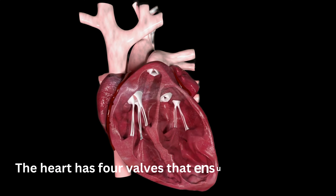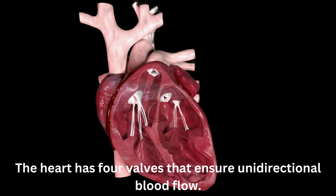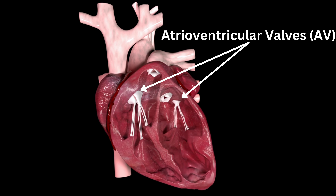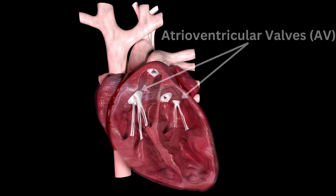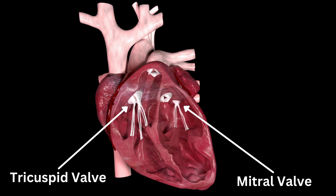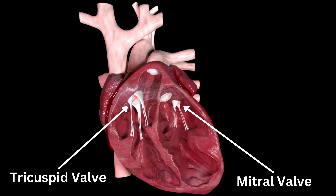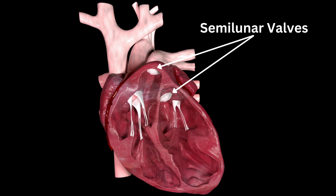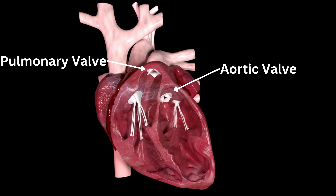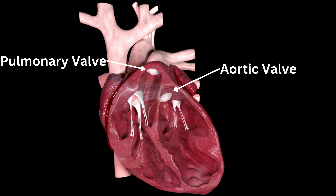The heart has four valves that ensure unidirectional blood flow. The atrioventricular (AV) valves, including the tricuspid valve on the right side and the mitral valve or bicuspid valve on the left side, separate the atria from the ventricles. The semilunar valves, including the pulmonary valve on the right side and the aortic valve on the left side, separate the ventricles from the major blood vessels.